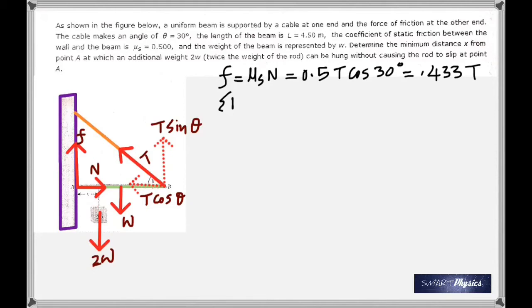Now there are two conditions in static equilibrium. The first one: the net force along the y-axis in this case must be zero, so the total upward forces must be equal to the total downward forces. You have two upward forces, one is friction, the other is T sin theta. Two downward forces: W here and 2W.